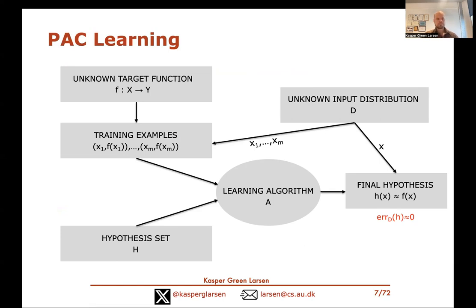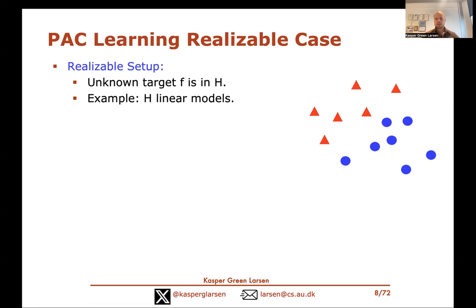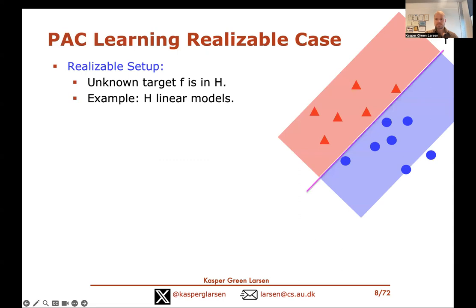This is the PAC learning setup. PAC learning can be studied under different assumptions; the simplest is the realizable case. In the realizable case, we are promised that the unknown target function belongs to the hypothesis set H. Concretely, if H is the set of linear models, we assume there exists a hyperplane f such that everything on one side is plus one and everything on the other side is minus one.